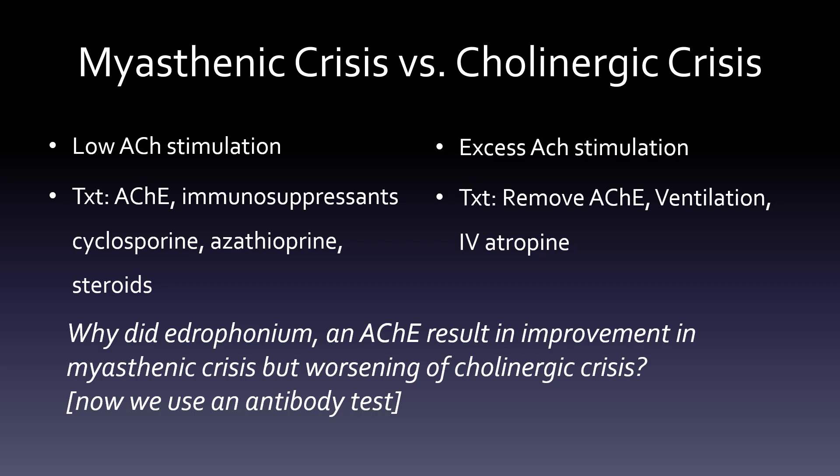Why did edrophonium, an acetylcholinesterase inhibitor, result in improvement in myasthenic crisis but worsening of cholinergic crisis? If edrophonium is an acetylcholinesterase inhibitor, that means it stops the breakdown of acetylcholine, so there will be more of it around — we're basically adding acetylcholine. If we add acetylcholine to myasthenic crisis where acetylcholine is low, it makes sense that they improve. However, if you're in cholinergic crisis and you give more acetylcholine, now you're in trouble — you're doing the wrong thing.